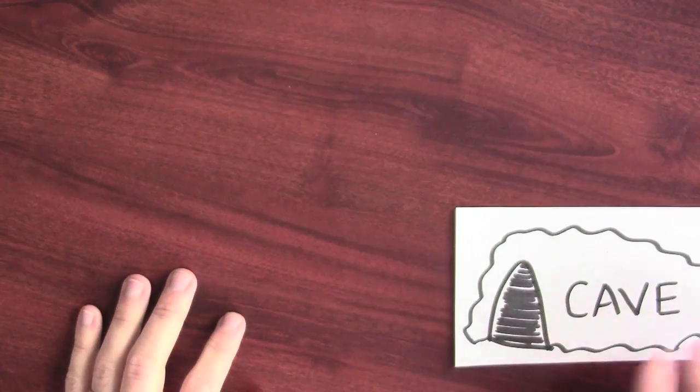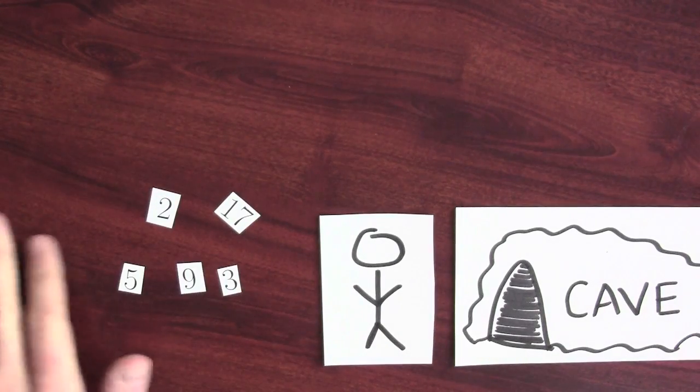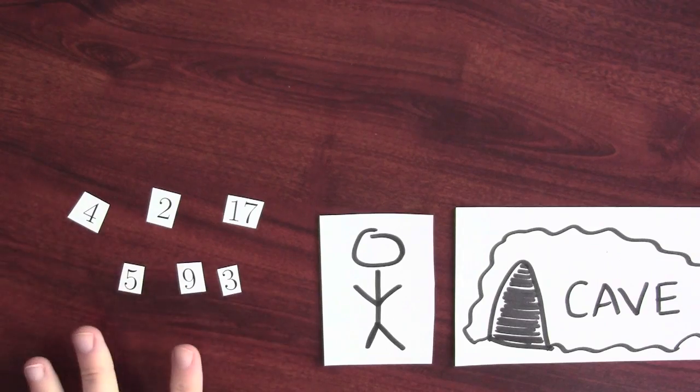Once upon a time, a long, long time ago, in a cave somewhere, there was some cave person who first started studying numbers. And then the cave person had an idea.